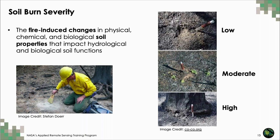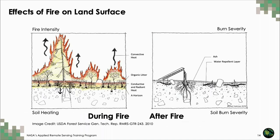Vegetation is not the only ecosystem feature impacted by fires. Soil burn severity is also an important factor. Fire-induced changes in physical, chemical, and biological soil properties impact the hydrological and biological functions of soil. Severely burned soil contains less organic matter but more available nutrients, and burned soil also makes landscapes more vulnerable to erosion and runoff, which was covered in session five.